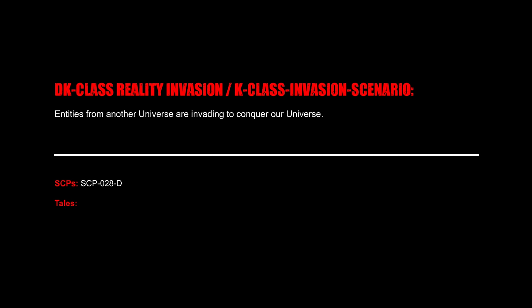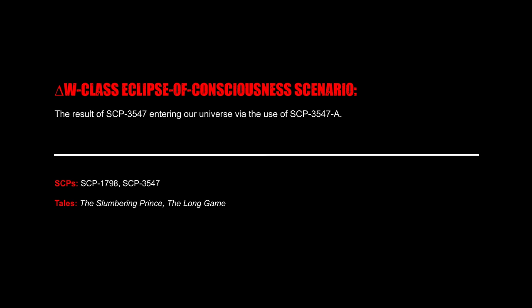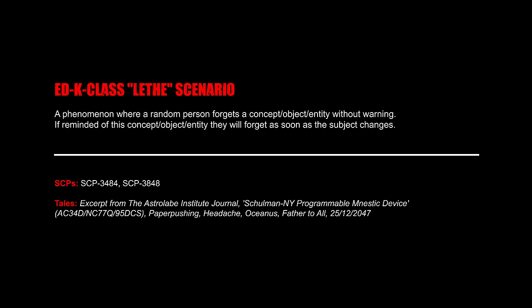DK Class Reality Invasion K-Class Invasion Scenario: Entities from another universe invade and conquer our universe. DT Class Split Timeline Scenario: An event where our timeline splits into two parallel causalities — usually non-apocalyptic. Delta-W Class Eclipse of Consciousness Scenario: The result of SCP-3547 entering our universe via the use of SCP-3547-A.